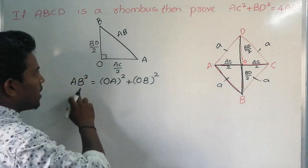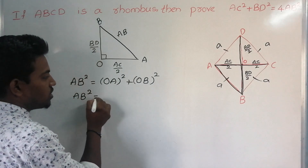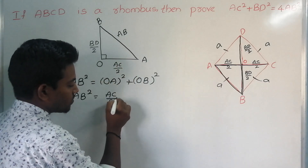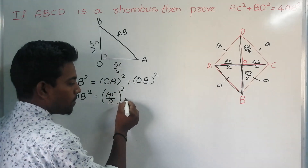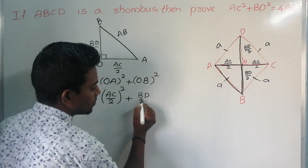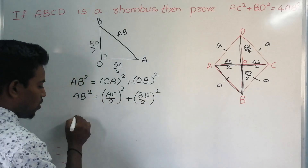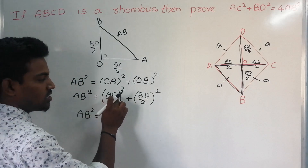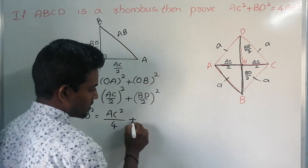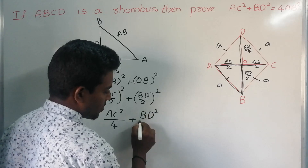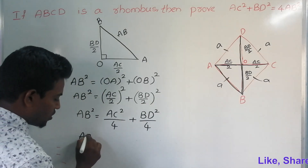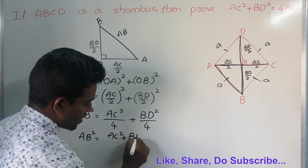Now directly substitute the values. AB² equals — AO is nothing but AC/2, so we get (AC/2)², plus OB is nothing but BD/2, so we get (BD/2)². Simplifying: AB² = AC²/4 + BD²/4. Since 4 is the LCM, AB² = (AC² + BD²)/4.